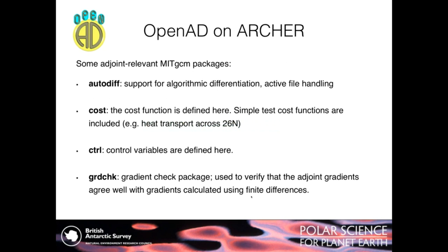There are key MITGCM packages needed for adjoint work. The autodiff package is a broad support package for the process of algorithmic differentiation — turning MITGCM source code into adjoint model source code. It also handles active files, which adjoint models generated by OpenAD and TAF tend to read and write to extensively as an alternative to keeping everything in memory. For a basic application you probably won't have to touch much in the autodiff package.